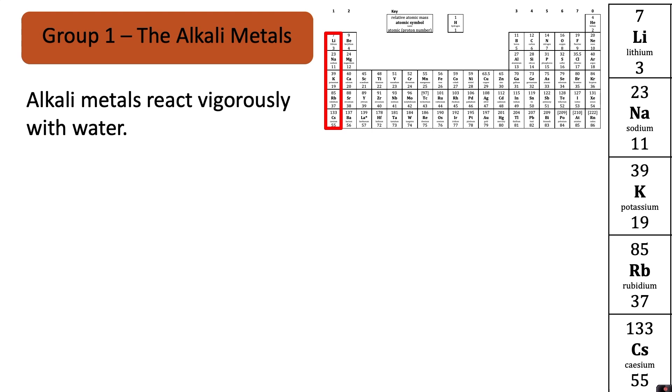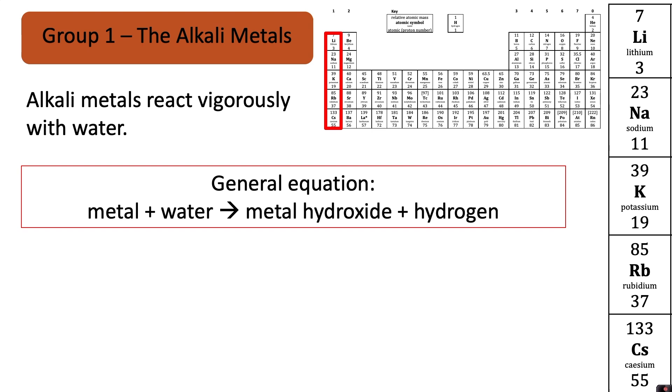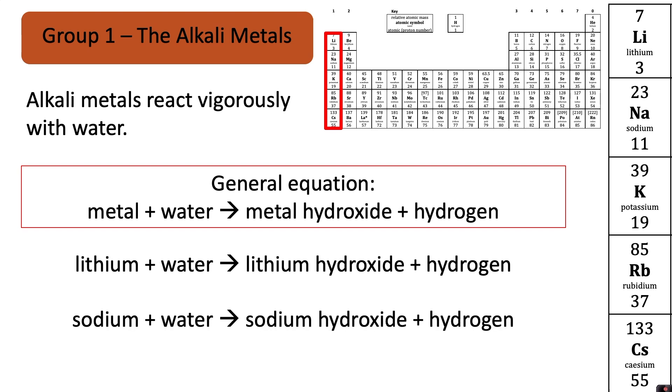Alkali metals react vigorously with water. The general equation shows a metal plus water makes a metal hydroxide plus hydrogen. For example lithium plus water would make lithium hydroxide plus hydrogen and sodium plus water would make sodium hydroxide plus hydrogen.